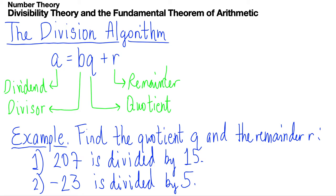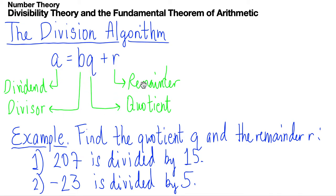Hi everyone. In this video we're going to present the division algorithm in action by citing some examples. Remember in our last two videos we proved the division algorithm using the existence and uniqueness proof of q and r. As a review: a is our dividend — any integer; b is our divisor — strictly a positive integer; and q and r are our quotient and remainder, which are unique integers.